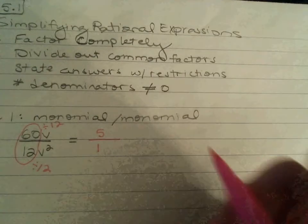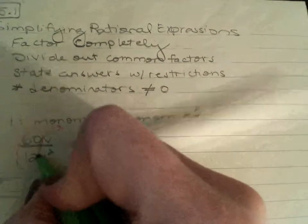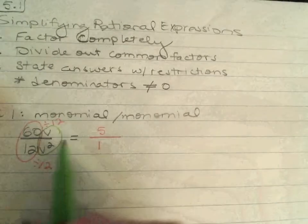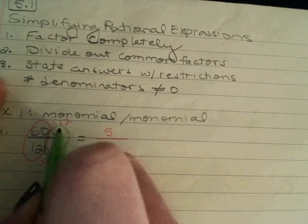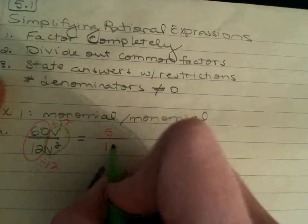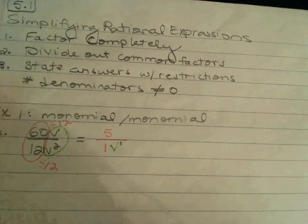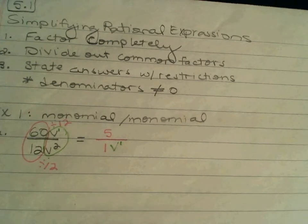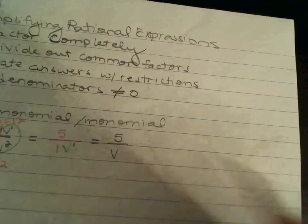And then, separately, we consider the variables. Now, if we just have a variable with no exponent, what exponent can we write in? A 1, right? So, like we said earlier, with the higher degree being in the denominator, we're going to subtract 2 minus 1, which is 1. And we're going to leave it in the denominator, since that's where the exponent is greatest. Now, we have some extra things in here that we don't need, like the 1 here and the 1 here. So, to write this as a fully simplified expression, we can just write it as 5 over V.